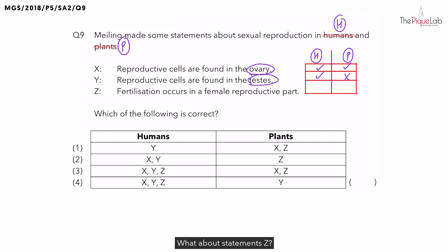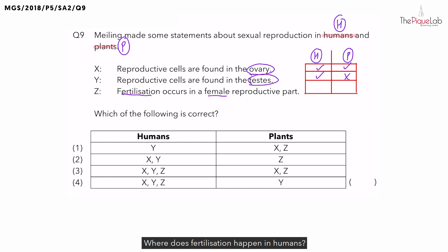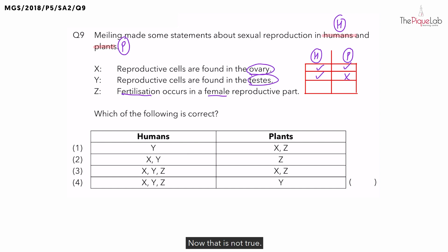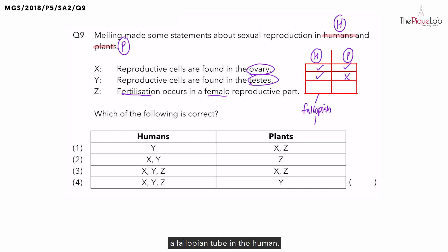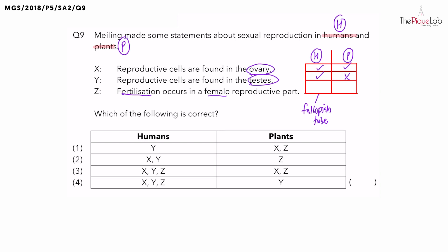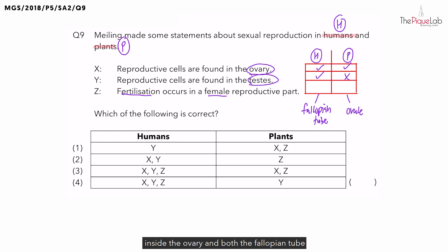What about statement Z: fertilization occurs in the female reproductive part. Where does fertilization happen in humans? A common misconception is that fertilization happens in the womb for humans — that is not true. Fertilization happens in the structure called the fallopian tube in humans. What about fertilization in plants? It happens inside the ovule, which is found inside the ovary. Both the fallopian tube and the ovule are female reproductive parts, so this statement is true for both humans and plants.